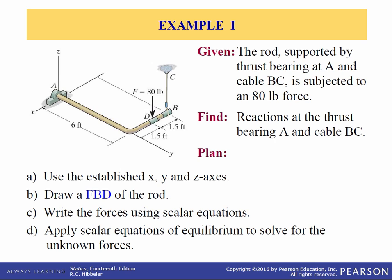Example: a rod supported by a thrust bearing at A and cable BC, subjected to an 80 pound load, with given dimensions and an established coordinate system. Find the reactions at the thrust bearing at A and the cable BC. We'll use the XYZ axis, draw a free body diagram, write out the scalar equations, and use those to solve for the unknown forces.